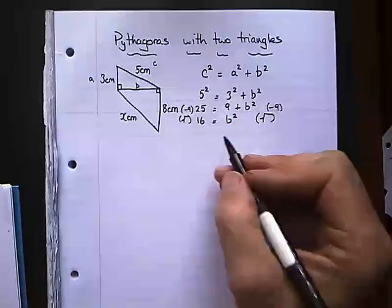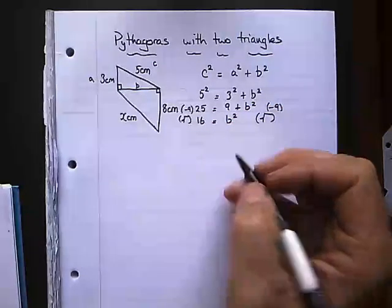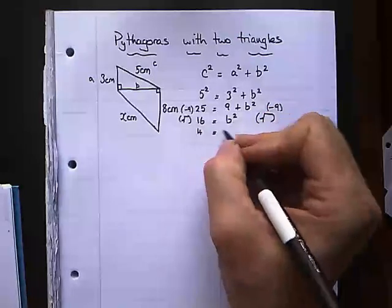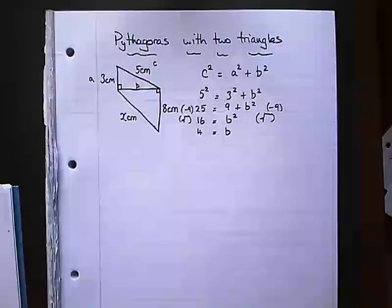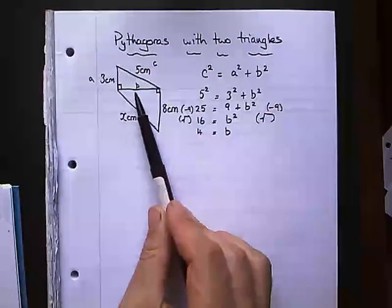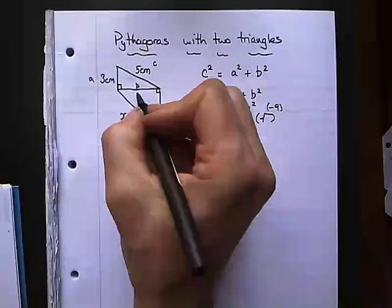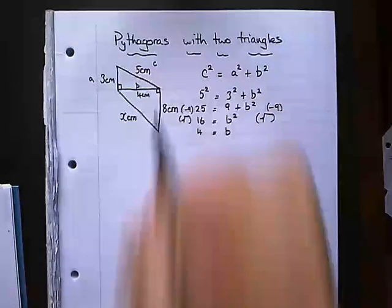The square root of 16 it's a nice square number so we get 4. So I've worked out that this length is equal to 4. 4 centimeters.